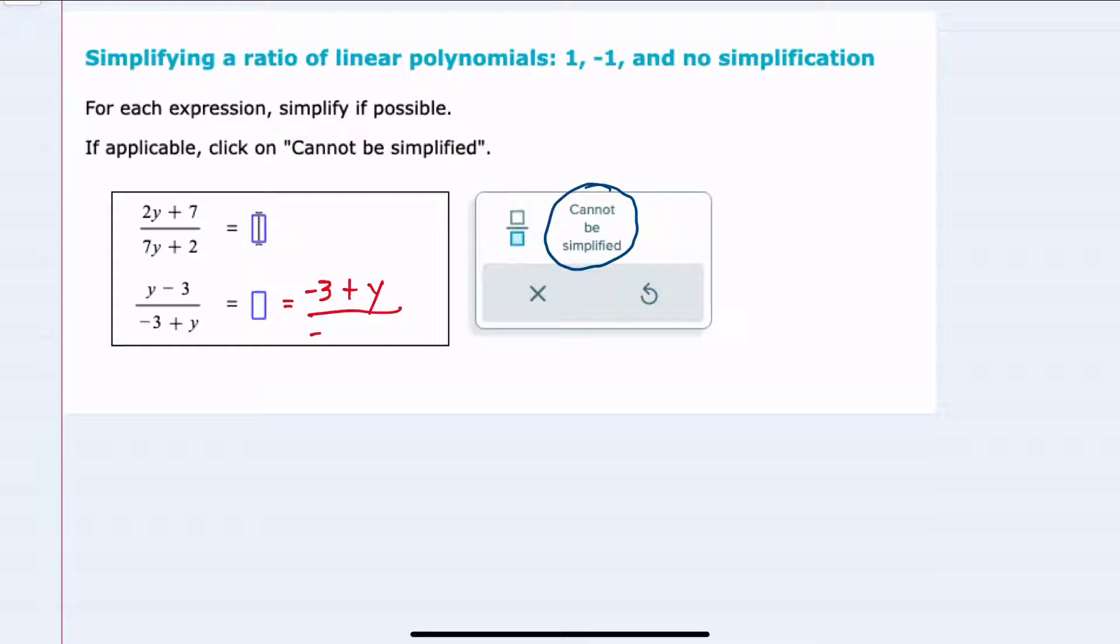And then I can see that the minus 3 plus y in the denominator is actually the same as the numerator. It's just written in a different order. And whenever my numerator and denominator are exactly the same, that simplifies to just being 1.